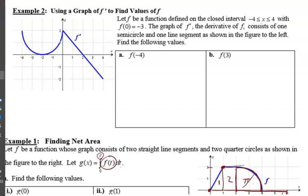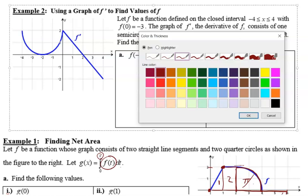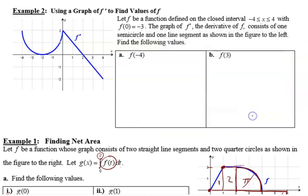I'm going to go back and hit example 2 and then we'll do example 3 in this video. I'm going to do part B of example 2 first. Here we're using more of the second fundamental theorem as opposed to the first or the accumulation functions. We are looking for values of a function when we are only given the graph of its derivative or its rate of change.